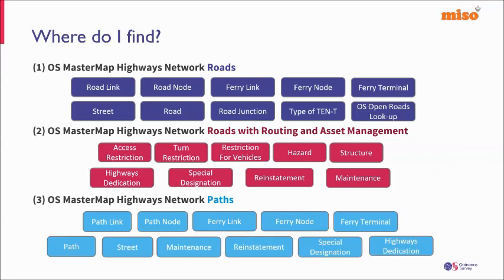The path data has a very similar structure to road data: path links, paths, and connecting links which connect back to the road data. One improvement over ITN is that these have been snapped to the vertices on the road link. The same gazetteer data applies where applicable.